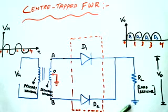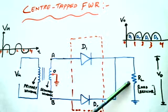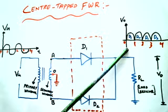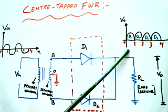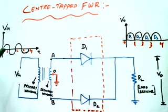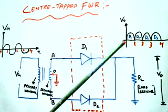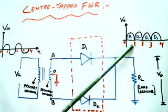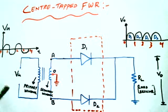This is the load resistor RL, and the output V0 is obtained across it. In full wave rectifier, output is obtained for both the positive half cycle and the negative half cycle. In half wave rectifier, output is obtained only for the positive half cycle (0 to 1) and no output for the negative half cycle. Whereas in full wave rectifier, for both half cycles (0 to 1 and 1 to 2) we are getting the output.